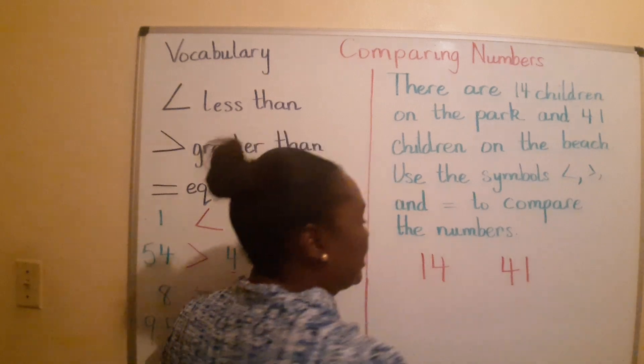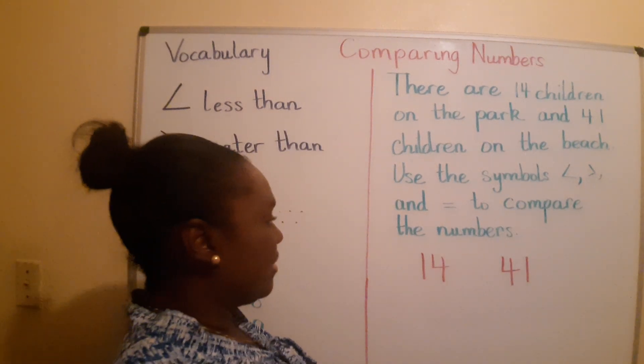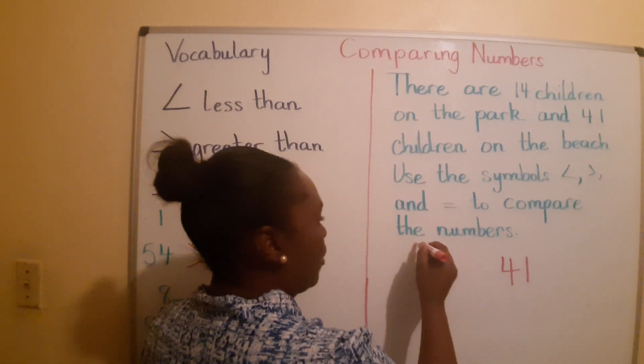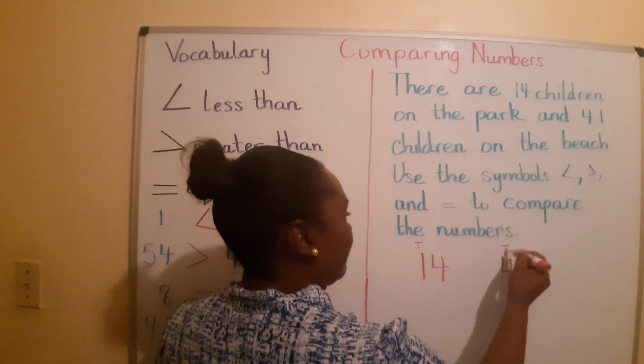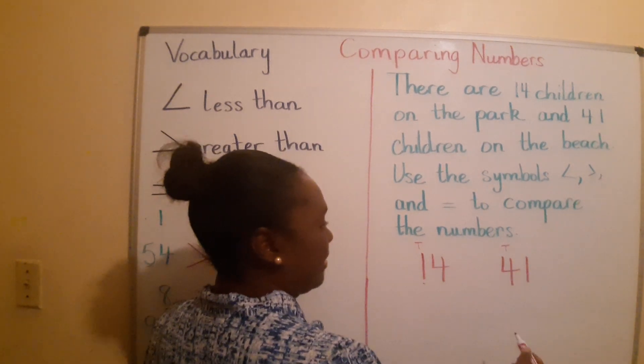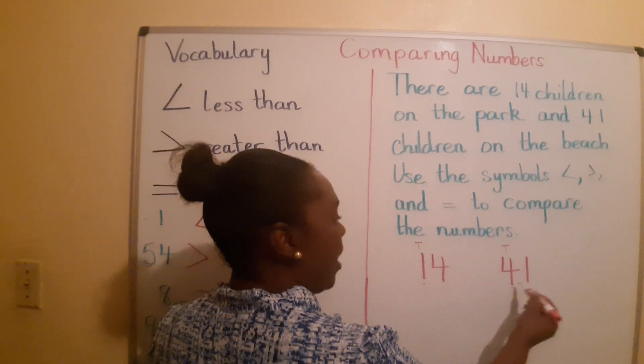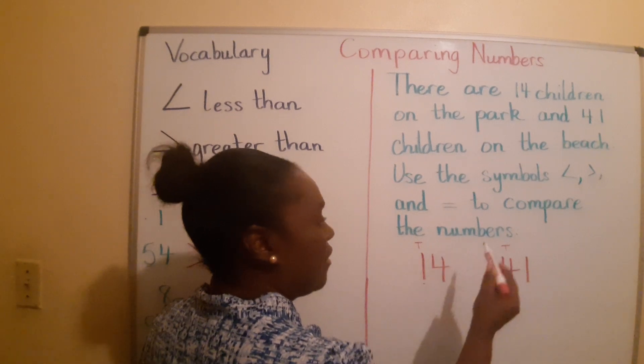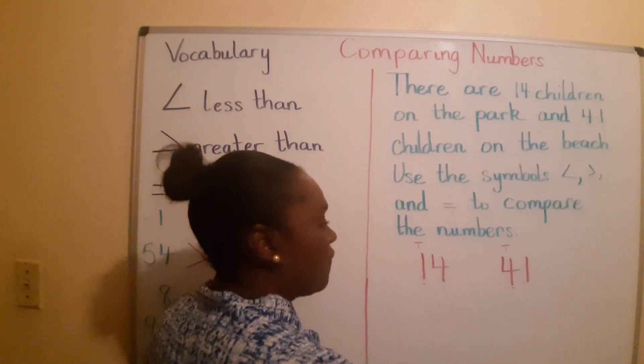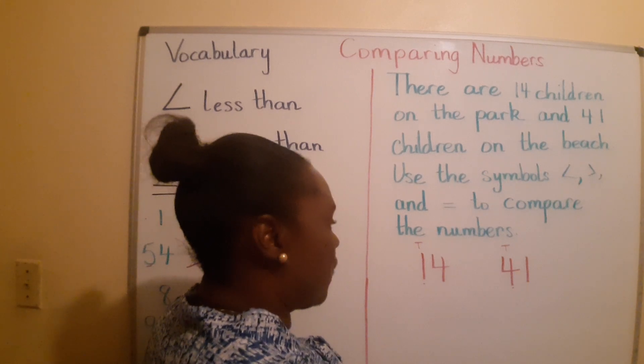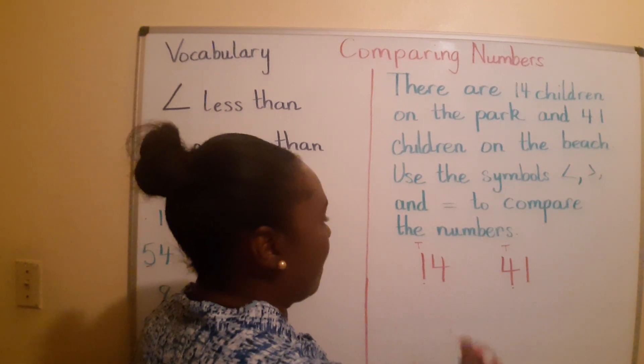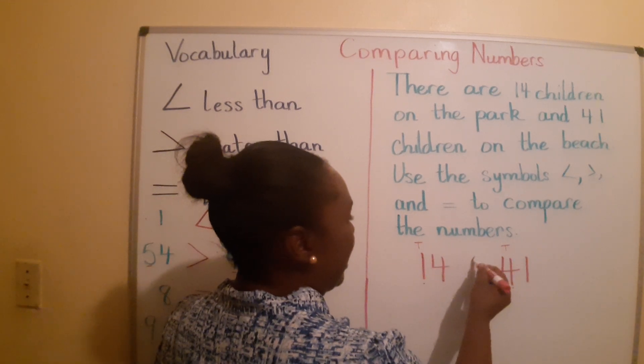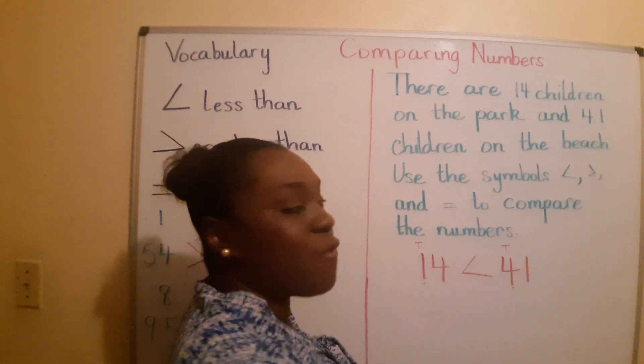14. How many children are on the beach? 41. Once again, these numbers look similar. Let's look at the tens place. We have a 1 in the tens place and a 4 in the tens place for 41. 1 in the tens place for 14, 4 in the tens place for 41. Therefore, we can say that 14 is less than 41.